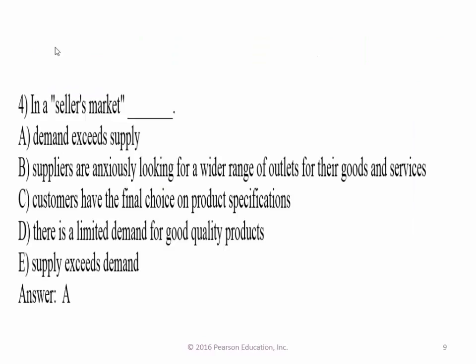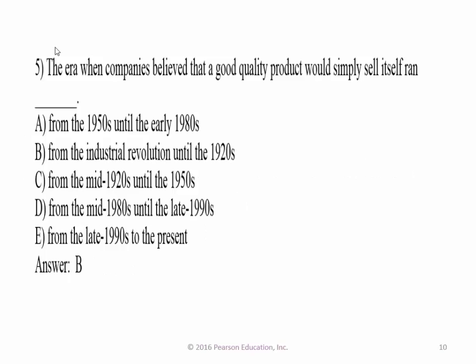In a seller's market, demand exceeds supply. That's what we had early on with the Model T — that's how sellers could dictate terms like 'it's going to be black.' The era when companies believed a good quality product would simply sell itself was in the 1920s, going back to the Model T era.